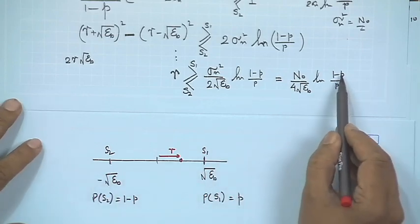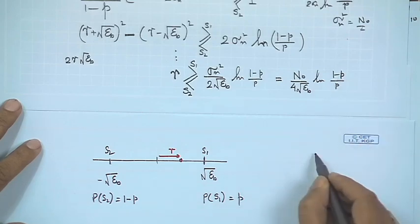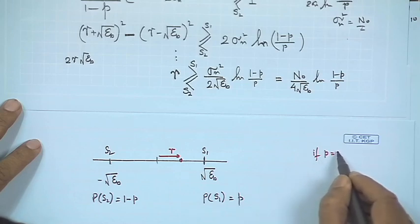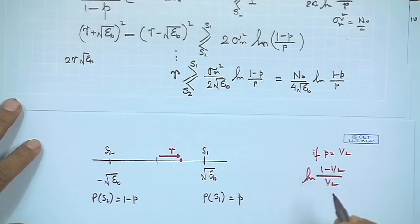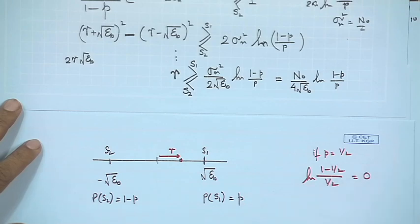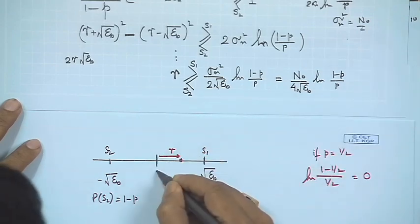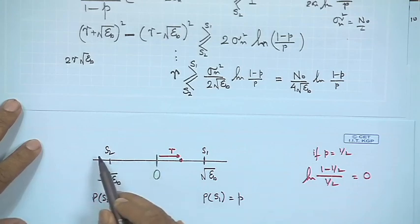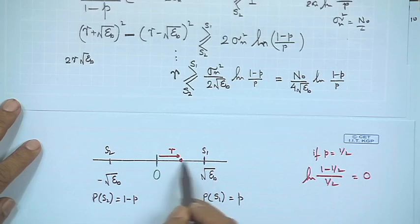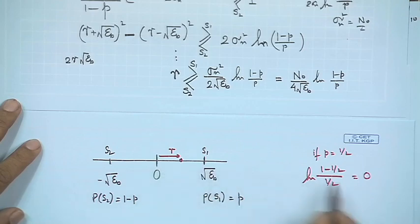When P = 1/2, the term ln((1 − P)/P) = ln(1) = 0, so the threshold is 0. This means we compare r with 0: if r > 0 we choose S_1, if r < 0 we choose S_2. This conforms exactly to the nearest-distance or minimum-distance criterion.